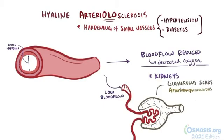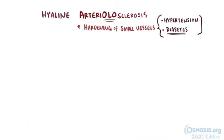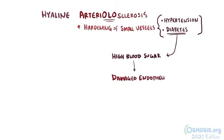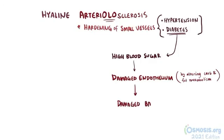If we don't do something to stop it, we'll see scarring occur to enough glomeruli that a person develops chronic renal failure. People with diabetes can have hyaline arteriolosclerosis through a different mechanism. Chronic exposure to high blood sugar can directly damage the endothelium, likely by altering carbohydrate and fat metabolism, which in turn damages the basement membrane of the blood vessels.